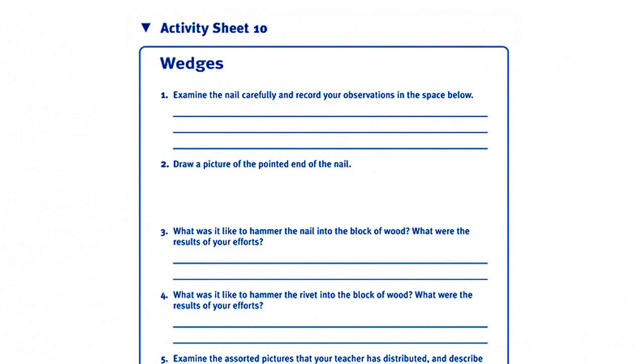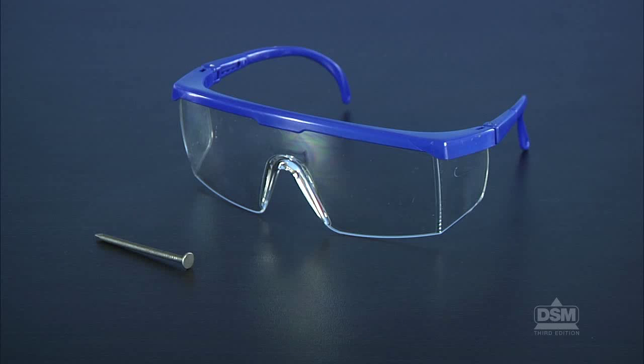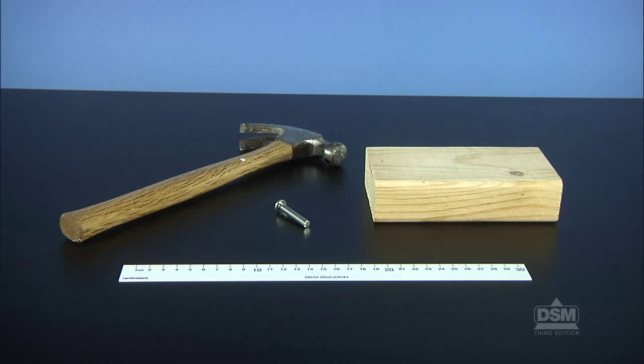To begin the activity, explain to the students that they will investigate a fifth type of simple machine in this activity, but do not tell them which one. Distribute a copy of Activity Sheet 10, a pair of safety goggles, and a nail to each student, and a scrap of wood, a hammer, a rivet, and a metric ruler to each team.